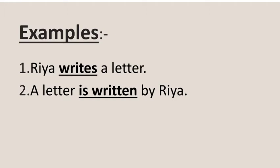In the second example, a letter is written by Riya, the subject here is a letter, but the work of writing is done by another. In other words, in this example, the subject and the doer are different — the work of the verb is not done by the subject. So, when the subject does not act itself but is acted upon, the verb is said to be in the passive voice.